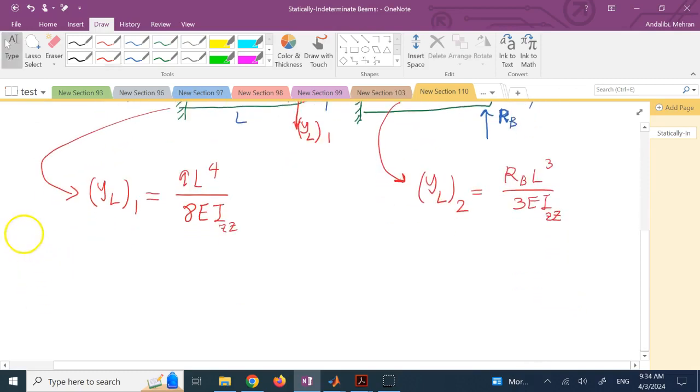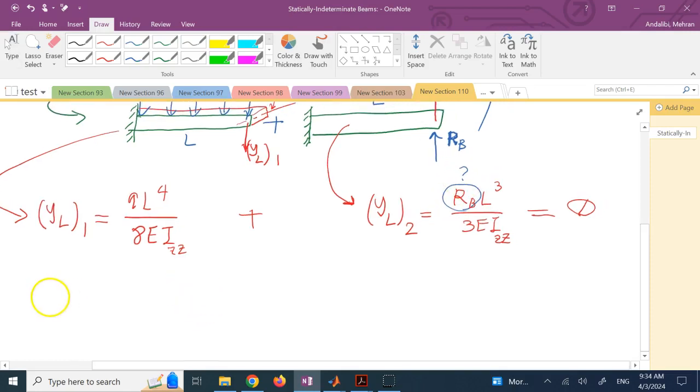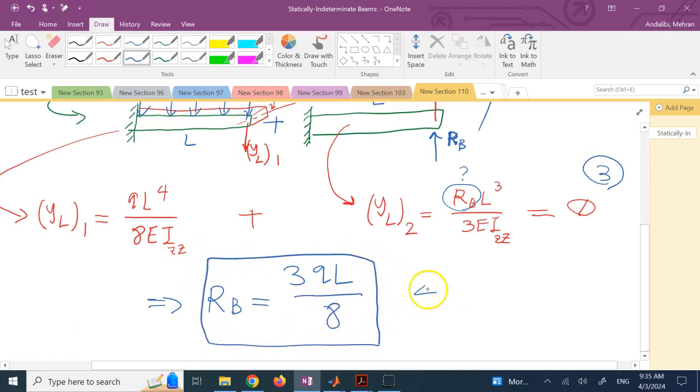Now, as I said, the sum of these two should equal zero. And guess what? This gives you another equation for which the only unknown is RB. So from here, if you call this equation number 3, you can directly solve for RB. And if you solve for RB, the solution is 3QL over 8. There we go, this is one of your unknowns. Let's call it equation 4.